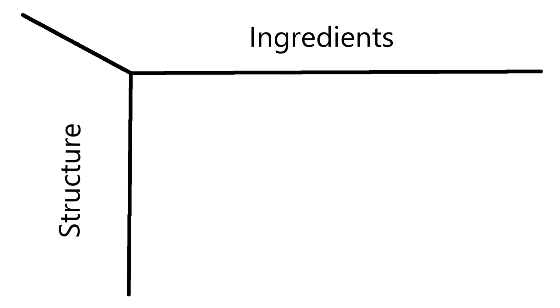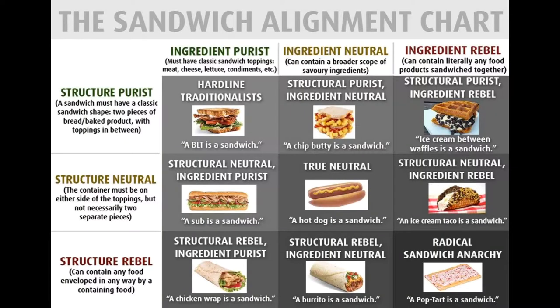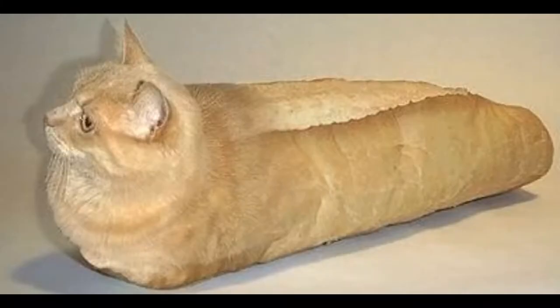More simply, the two questions are: what can a sandwich be made out of, on a scale from bread to not bread, and what can a sandwich contain, on a scale from traditional ingredients to more or less anything. Personally, I'm a believer that what makes a sandwich is being placed between two pieces of bread, which according to the chart makes me a structure purist ingredient rebel. This is both a necessary and sufficient condition — literally anything contained between two pieces of bread is a sandwich, and nothing is without the bread. What you personally count as bread may vary, though, and I don't have a precise answer for where to draw the line.